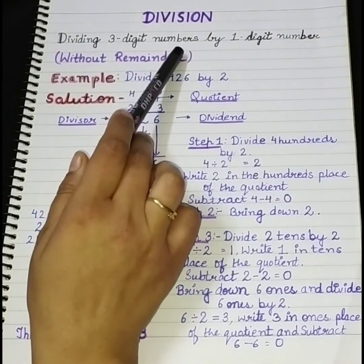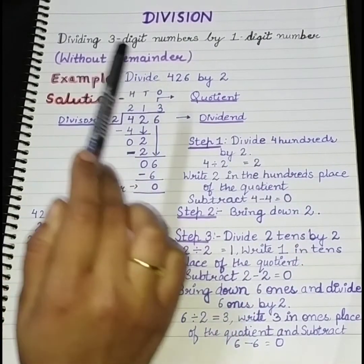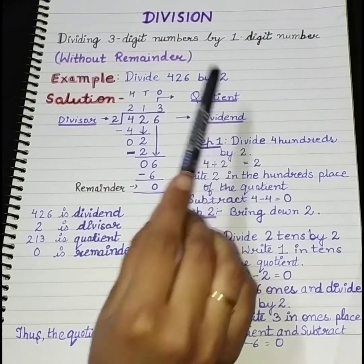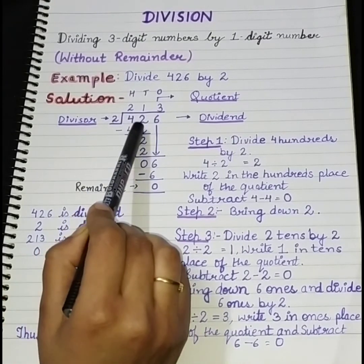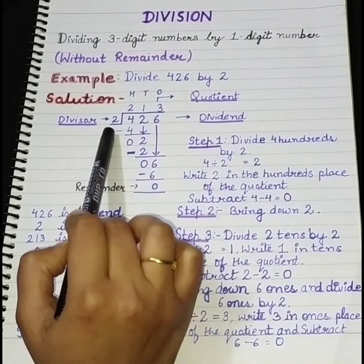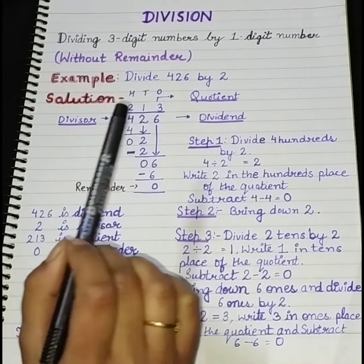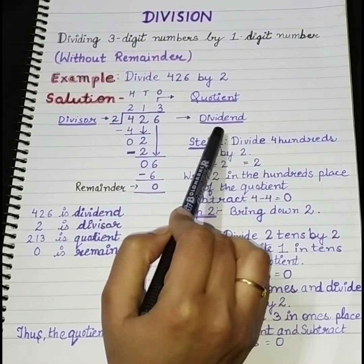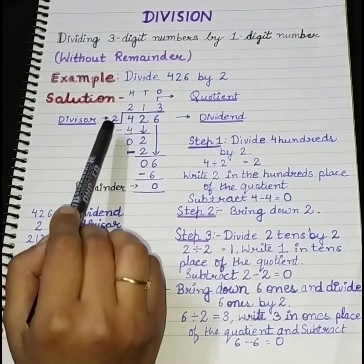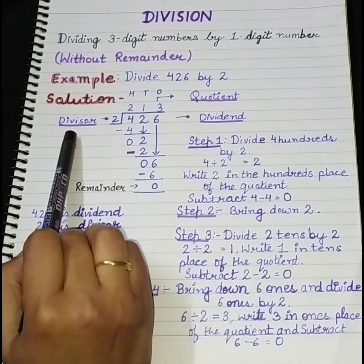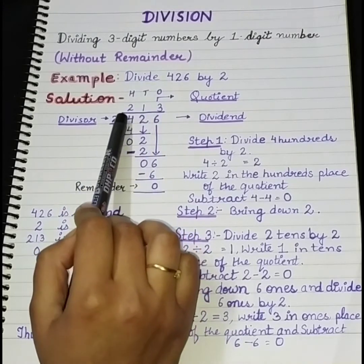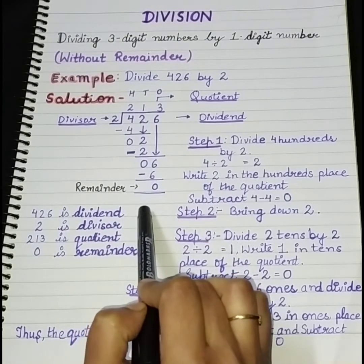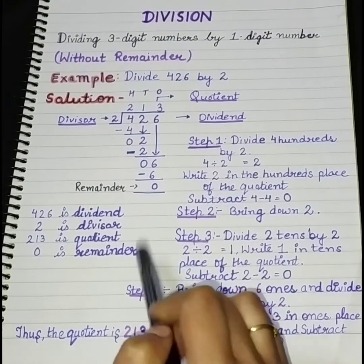Now let's look at dividing three-digit numbers by one-digit number without remainder. Let's understand this from one example: divide 426 by 2. First of all, you will arrange it so that 426 is written inside and 2 is written outside. Now there are important terms — the number that is being divided we call the dividend, the number which divides we call the divisor, and the answer found by dividing one number by another we call the quotient.